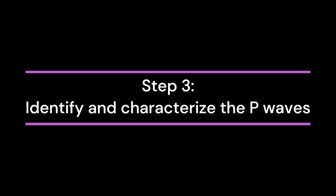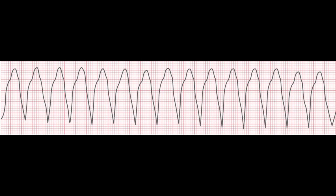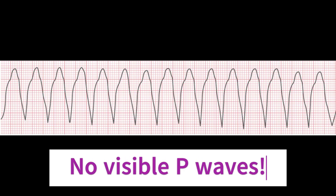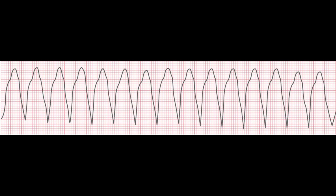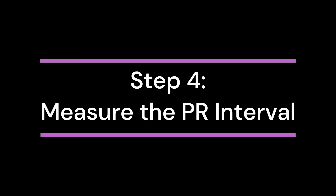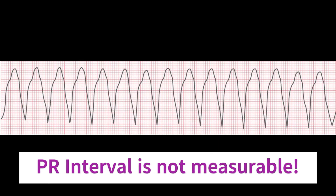Step 3: Identify and characterize the P-waves. Another feature of VTAC on an EKG is the absence of P-waves, which represent atrial depolarization. In VT, the atria and ventricles are not beating in sync, so the P-waves may be absent, hidden in the QRS complexes, or completely dissociated from them. Step 4: Measure the PR interval. Since the P-waves are absent or not seen, the PR interval cannot be measured.